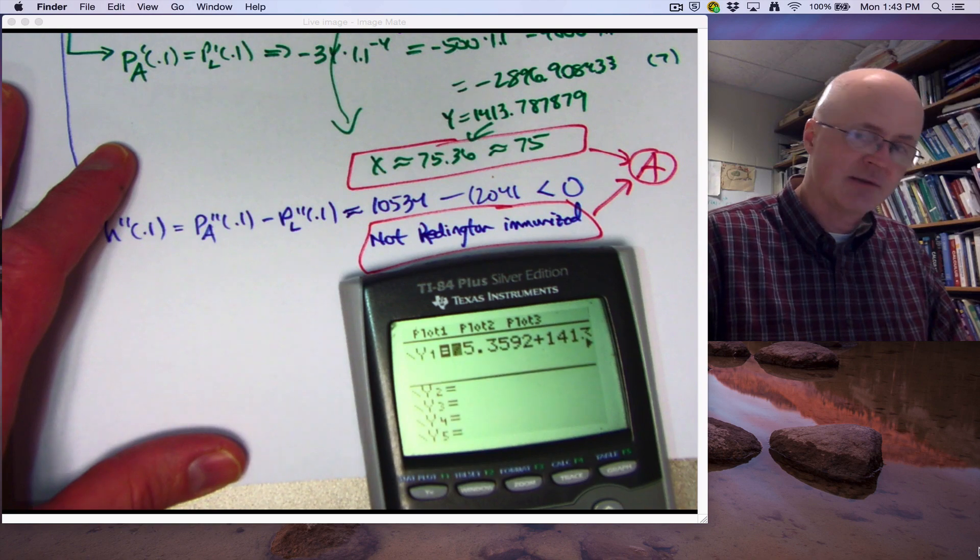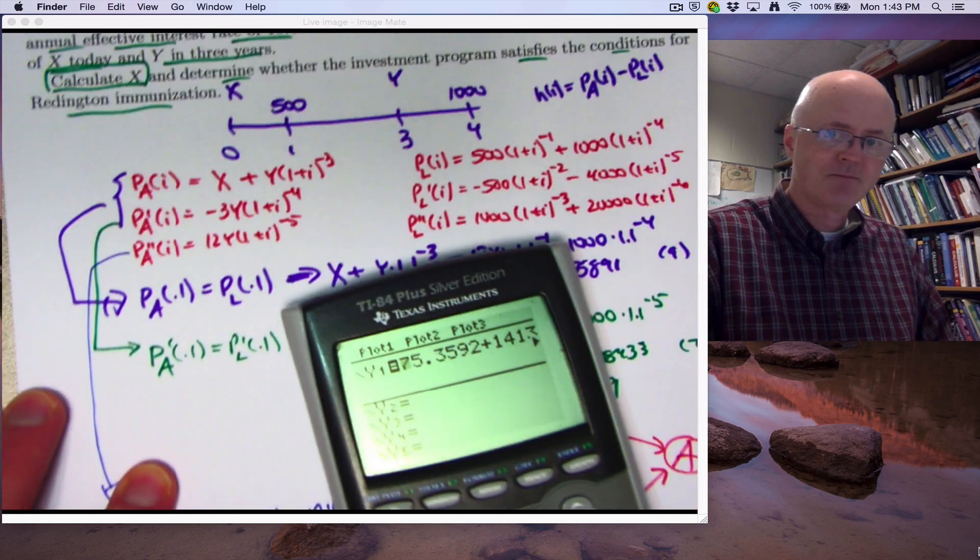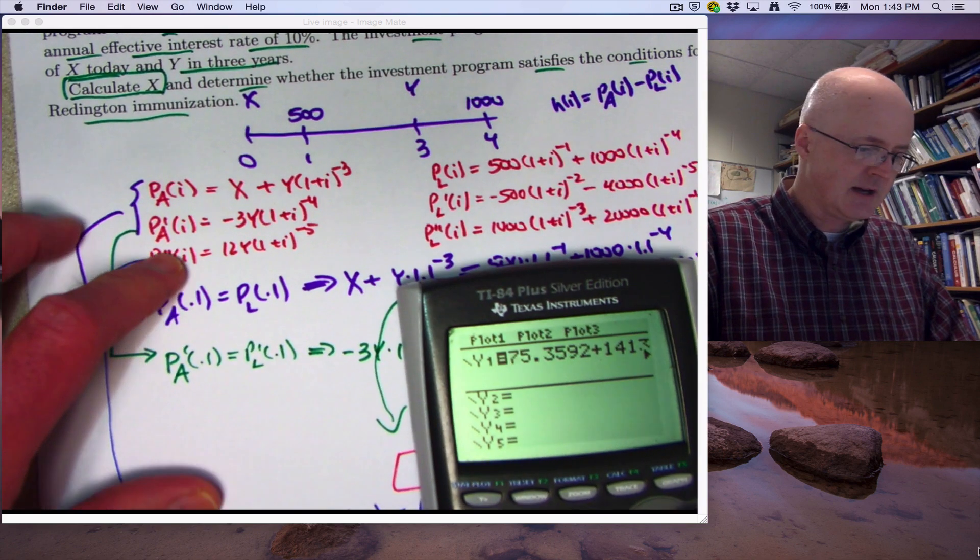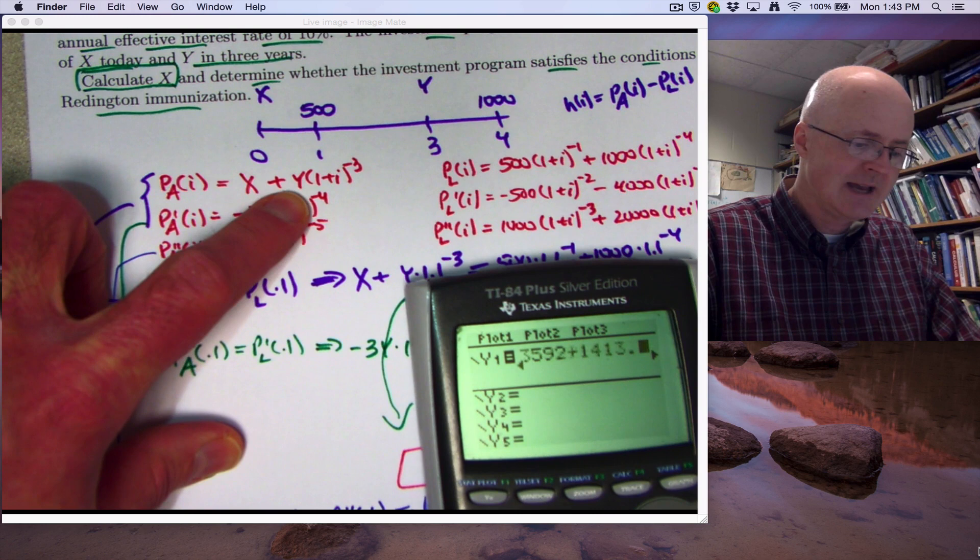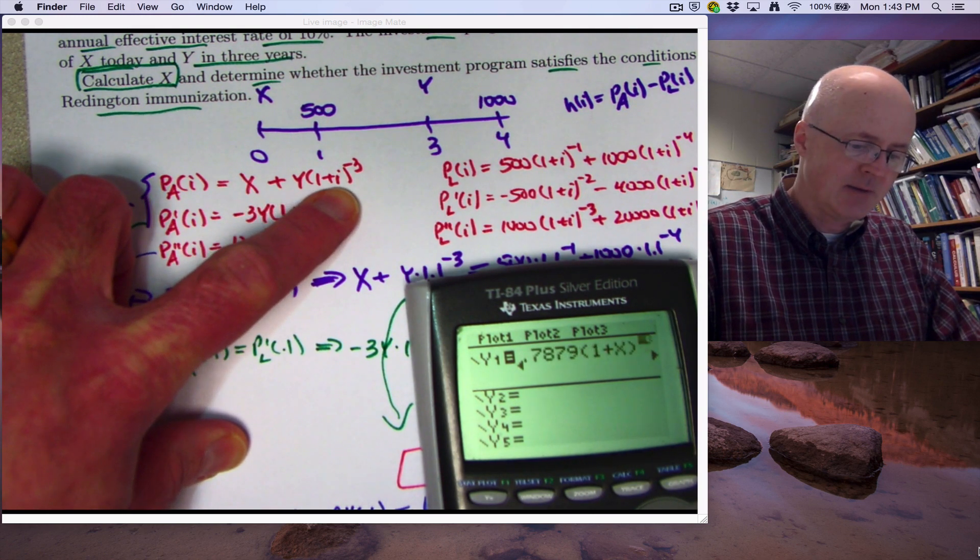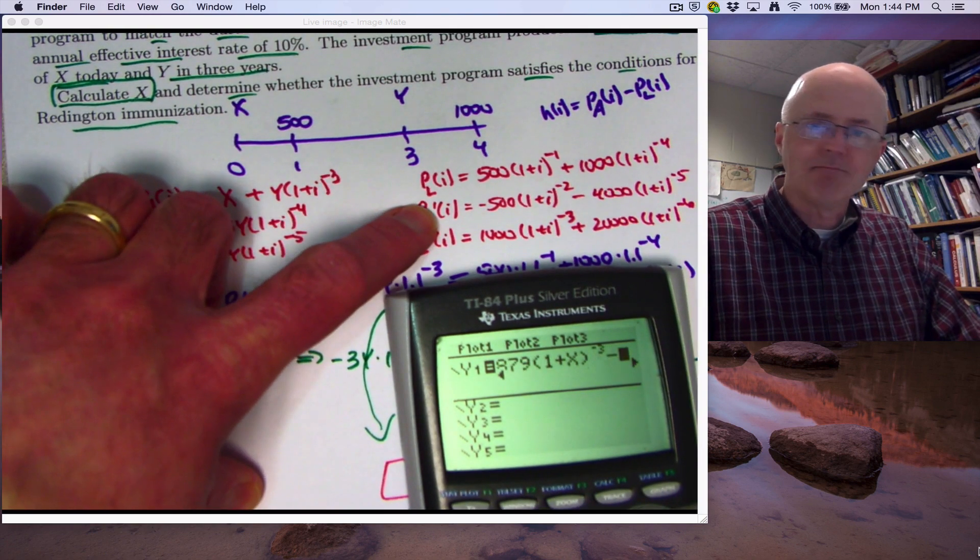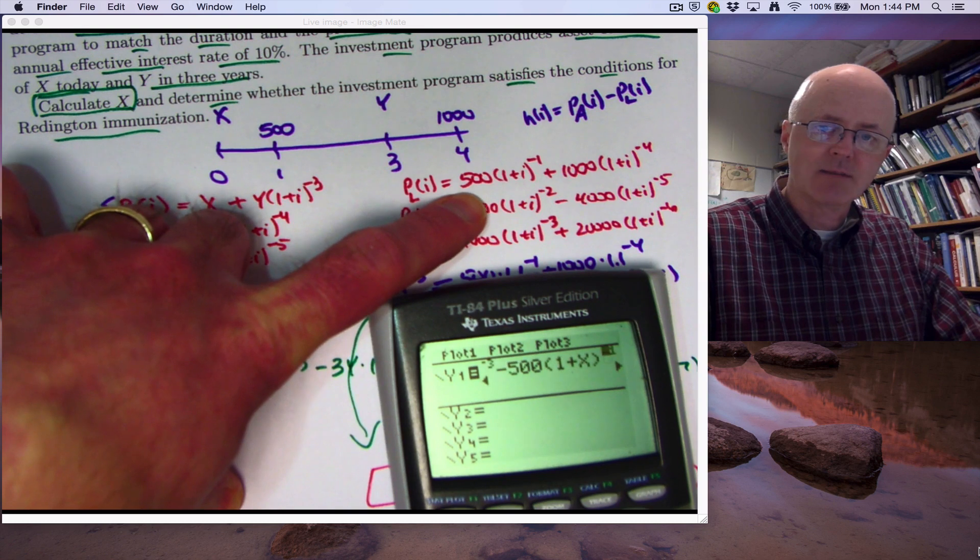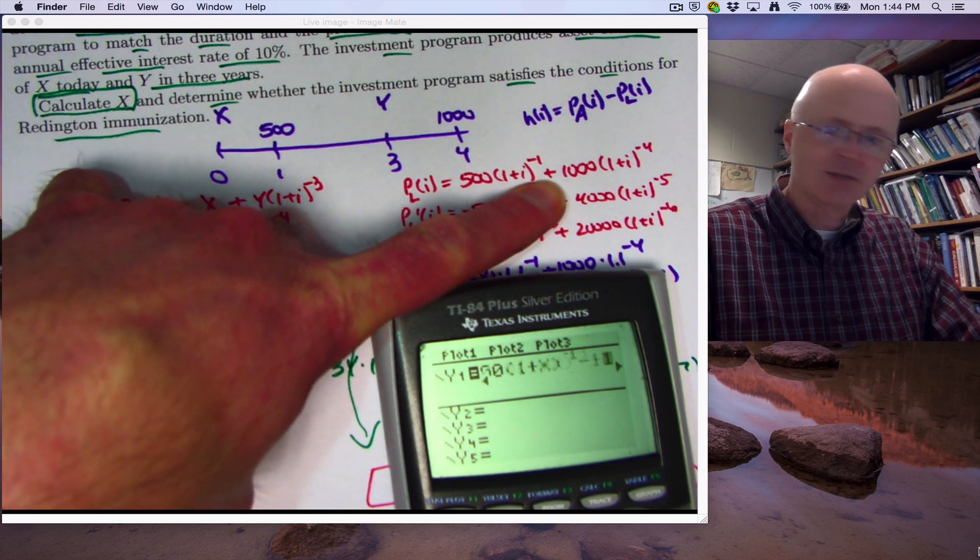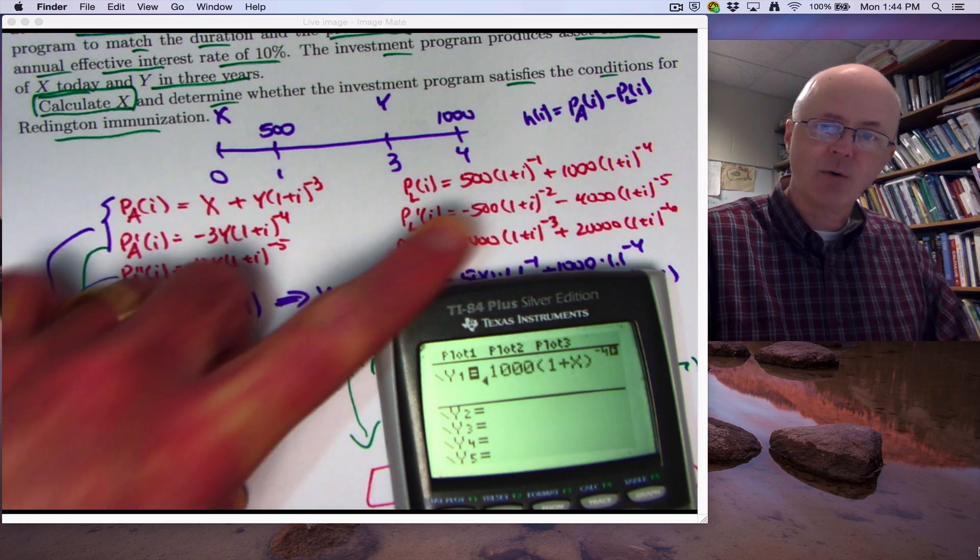Let me just end this video by showing you this graphically. What I've got here is the graph of h of i. This h of i is plugged into the calculator here. You can compare. So what you see here is, first of all, x is 75.3592 plus y times 1 plus i to the negative 3 power. Type in as 1 plus x to the negative 3 power. Then minus 500 1 plus i to the negative 1 power minus 1000 1 plus i to the negative 4 power.